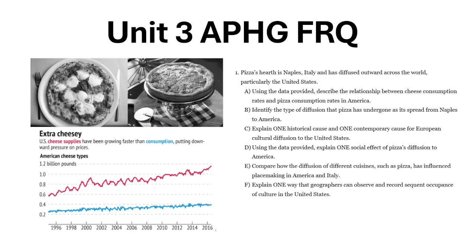Pizza started in Naples, Italy. That's its hearth — that's where it originated from. It's diffused across the world, particularly in the United States, where it's so popular. There are so many different pizza types, as we can see in this first image. The second graph shows that cheese supplies have been increasing, while consumption has also been increasing, just not increasing as fast.